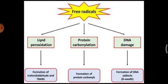Looking at this illustration, you can see how free radicals act on lipid, protein, and DNA. Lipid undergoes peroxidation leading to the formation of malondialdehyde. Protein undergoes carbonylation with formation of carbonyls, and DNA damage forms adducts. In this way, major biomolecules — lipids, proteins, and nucleic acids — are damaged by free radicals. These free radicals are scavenged, removed, or inactivated by Vitamin E.